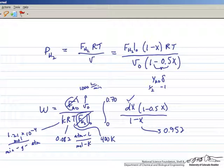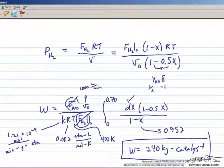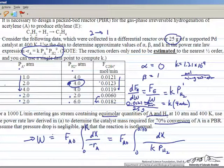This leads to a catalyst mass of about 240 kg. This problem illustrates how we start with kinetic data from part A - first order dependence on hydrogen, zero order on acetylene, and the rate constant value - and use it to solve for the catalyst mass needed in a packed bed reactor.